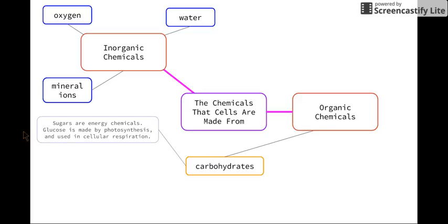So some of the uses of carbohydrates include sugars are energy chemicals. As we know, sugar is used in the process of respiration. Glucose is made by plants during the process of photosynthesis, and then it is used in cellular respiration, both in plants and animals.